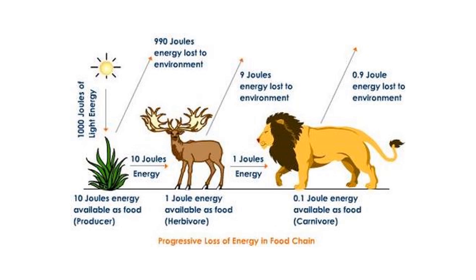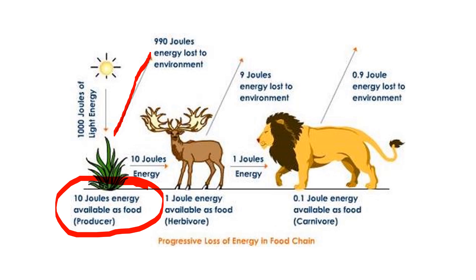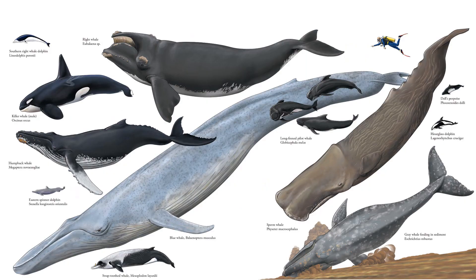A huge amount of light energy enters a system but much is lost, with only a small fraction converted into primary producers, and a smaller fraction still converted into primary consumers, and so on up the food chain. This is part of why whales are relatively rare — they're very large organisms that often feed at high trophic levels, and it takes a lot of energy to build those bodies. Part of the reason large whales tend to feed on very small organisms is that there simply couldn't be enough larger fish in the ocean to sustain them.